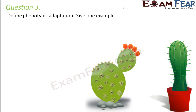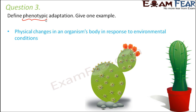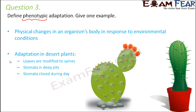Question number 3: Define phenotypic adaptation and give one example. Phenotype is about the physical makeup of an organism, while genotype is the genetic makeup. So phenotypic adaptation refers to changes in the physical appearance of an organism in order to adapt to environmental conditions. One example is the adaptation seen in desert plants.